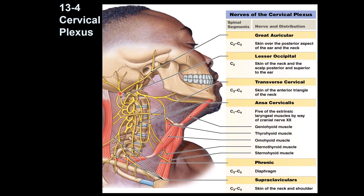Then you have the lesser occipital nerve, which supplies the back of the upper neck in the occipital area, and also a little bit of the superior part of the ear. So this area near the occipital region is supplied by the lesser occipital.